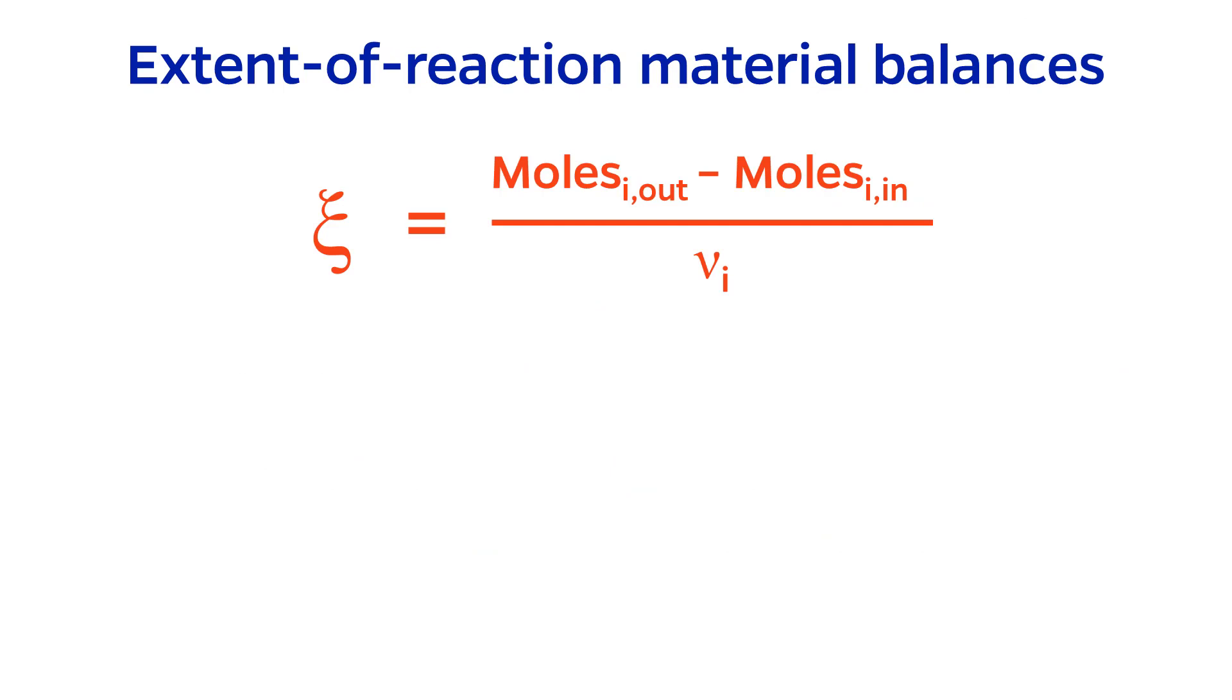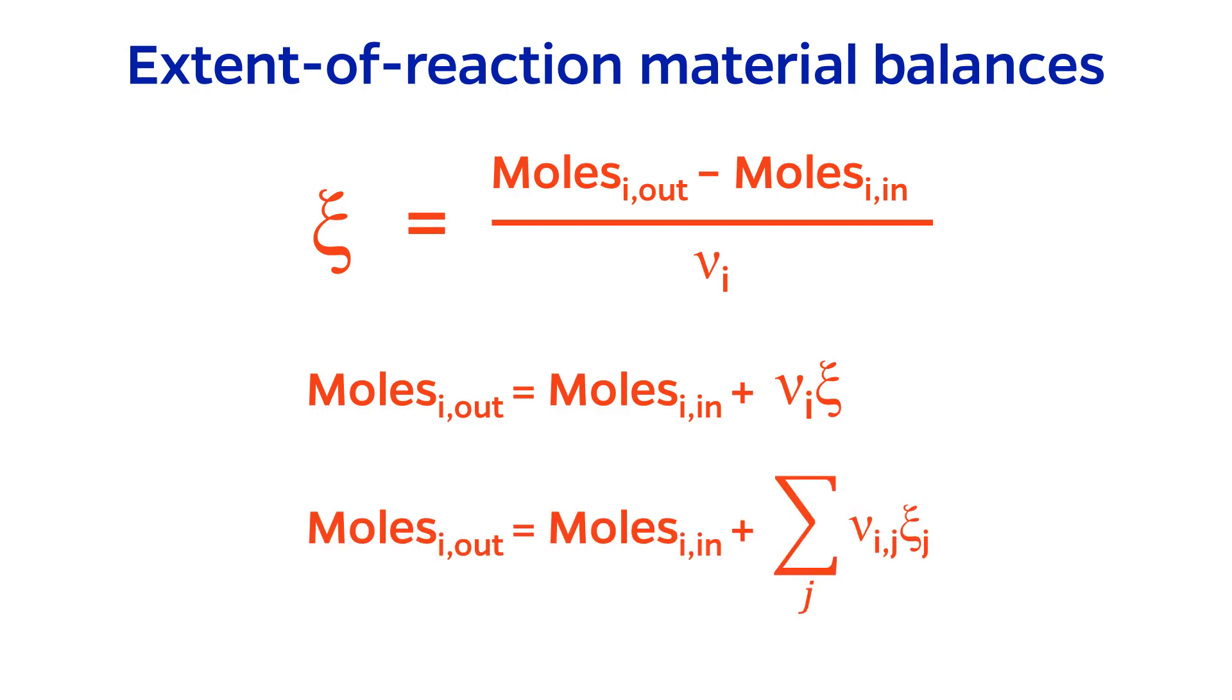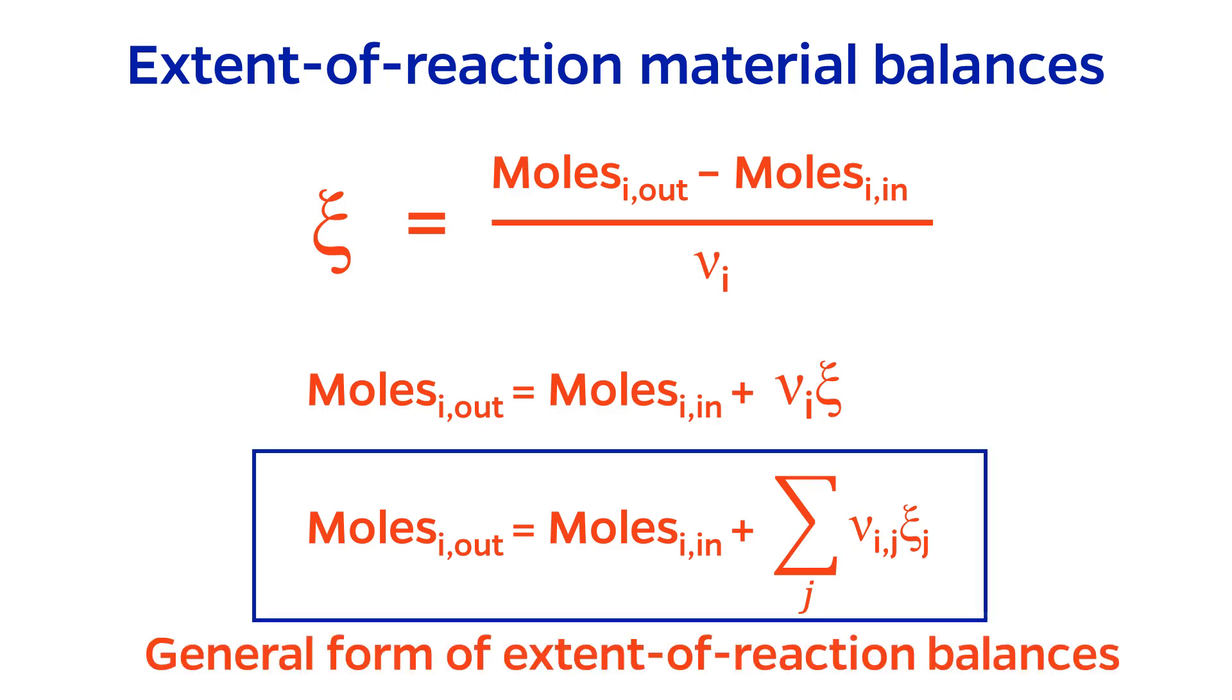By rearranging the definition equation, you can solve for moles out and say that they are equal to moles in plus stoichiometric coefficient times the extent of reaction. But here's where the real magic happens. If there are multiple reactions, you can simply add the stoichiometric coefficient times the extent of reaction term for each equation. And this is the general form of our extent of reaction material balances, where the subscript j represents other reactions.